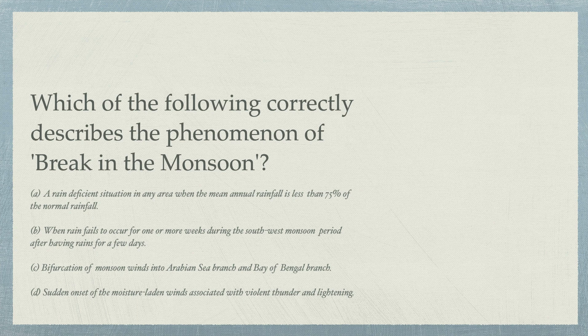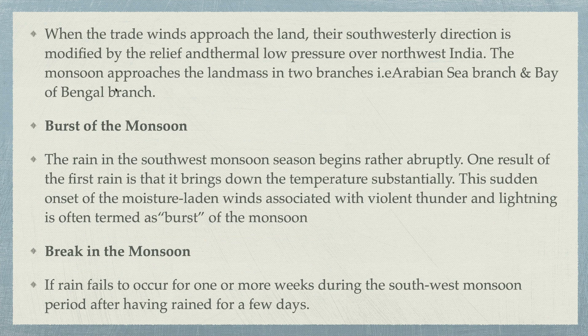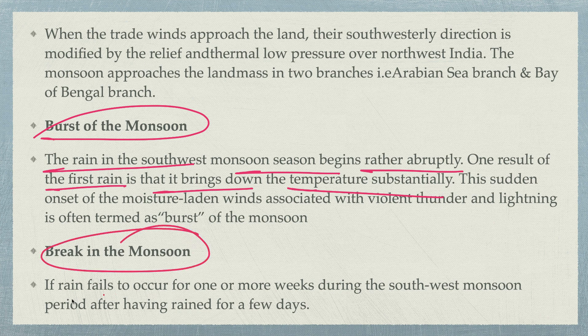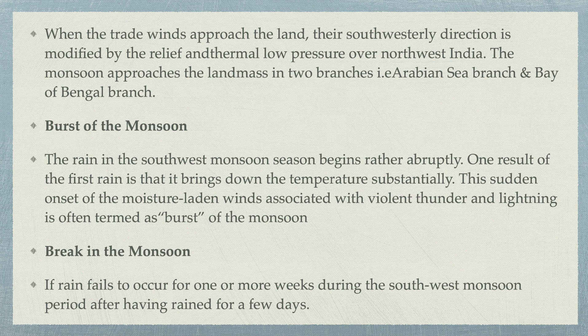Option four: sudden onset of the monsoon. When rain fails to occur for one or more weeks during the southwest monsoon period after having rain for a few days — that is called the 'break in the monsoon.' The rain in the southwest monsoon season begins quite abruptly, bringing down temperature substantially with thunderstorm and lightning — that's called the 'burst of the monsoon.' Then there's the arrival, the break, and finally the retreat of the monsoon. These terminologies are very important.